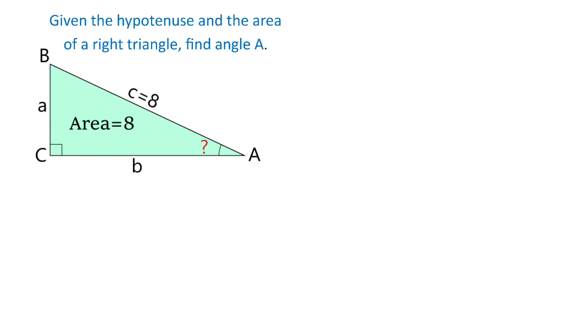Hello. Here we have a right triangle with the area of 8 square units and the hypotenuse of 8 units. We need to find the measure of angle A.